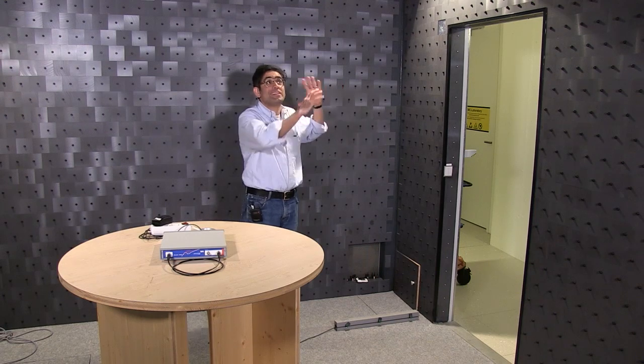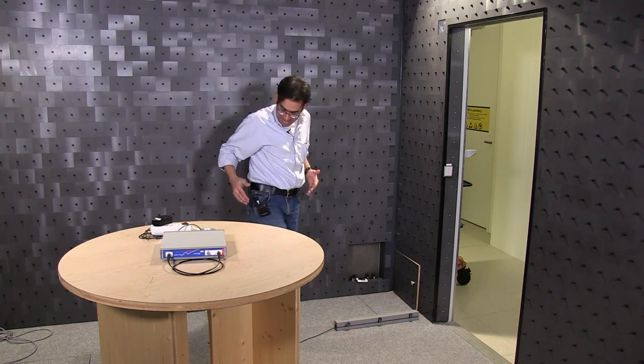But a good example of showing that this test chamber is stopping all RF emissions from getting in is the fact that I am wearing a radio mic and as soon as I shut that door we're going to lose the signal from the mic and you're going to hear static.